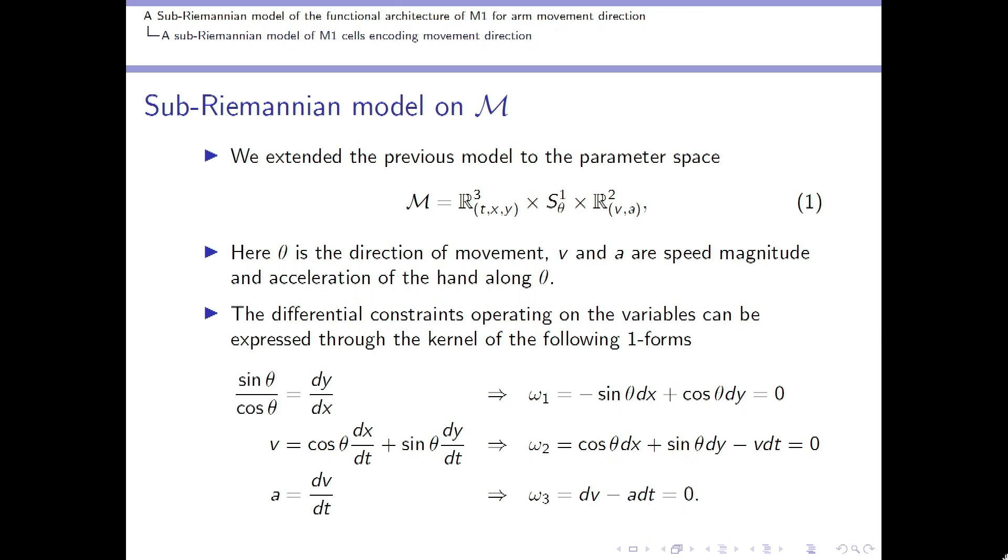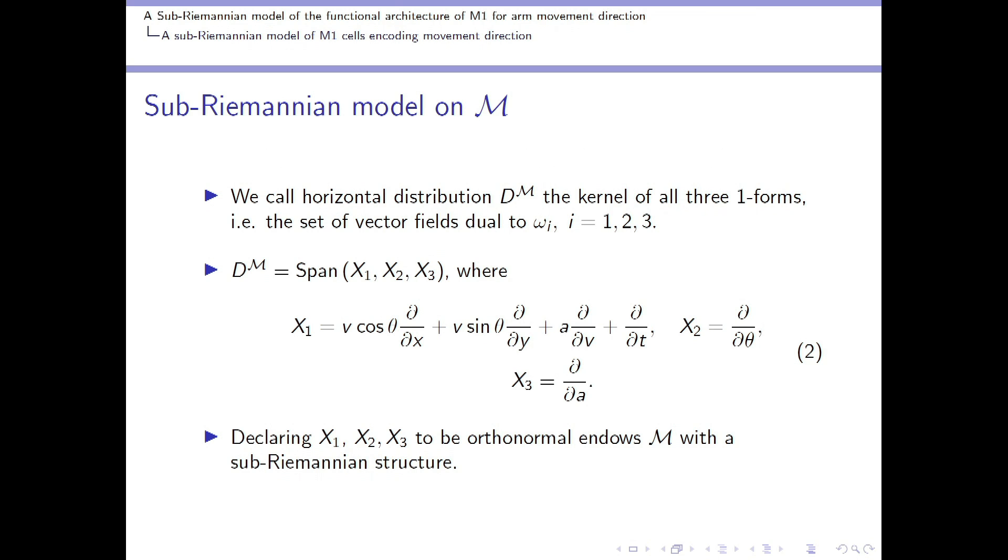In the same way, the second kernel of one-forms omega 2 represents the direction of the velocity, because if cos theta sin theta is the unitary vector representing the movement direction, then its product with dot x and dot y yields speed. In analogous way, the third one-form expresses the differential relations with speed, acceleration, and time. From this, we considered a horizontal distribution, which is the kernel of all three one-forms.